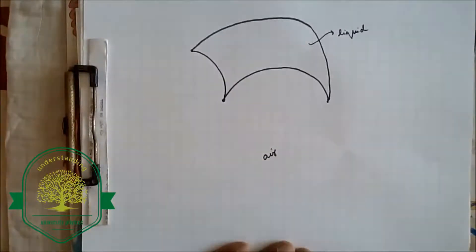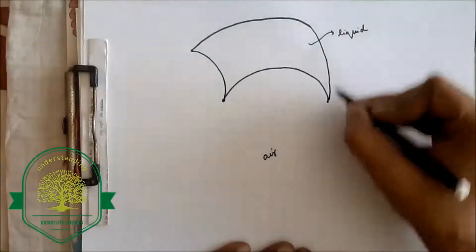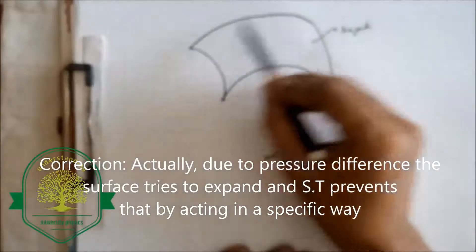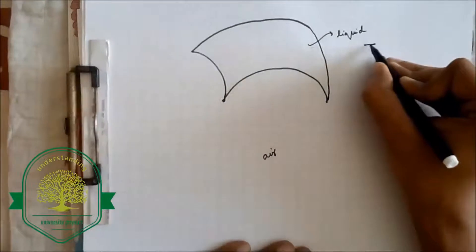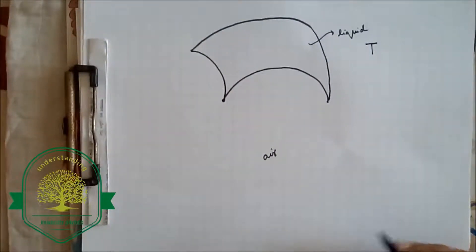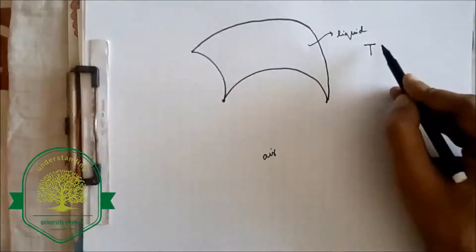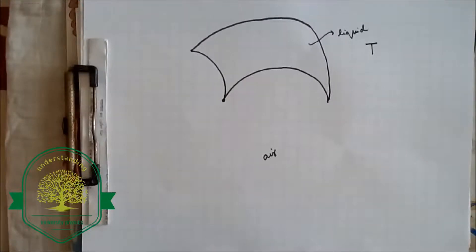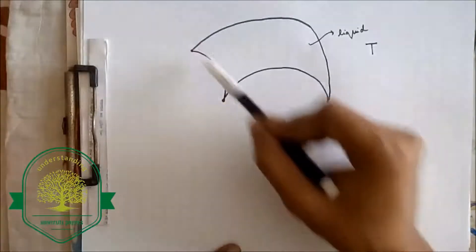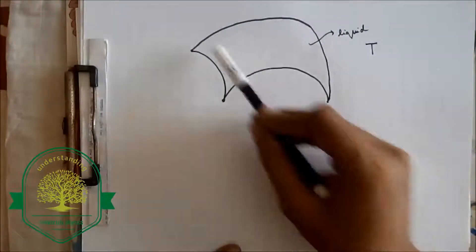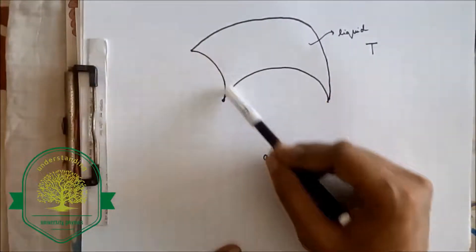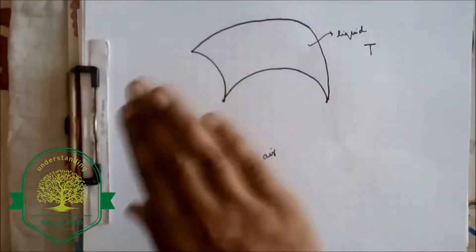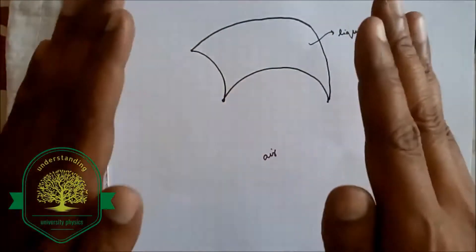This may be some liquid film and the outside medium is some gaseous medium — let that be air. Because of the property of surface tension, this liquid surface will try to contract, and therefore forces of surface tension will act along these edges. Let surface tension be T, which is force per unit length. The surface tension forces will not be in the plane of paper because the surface itself is curved — they will act in an inclined way.